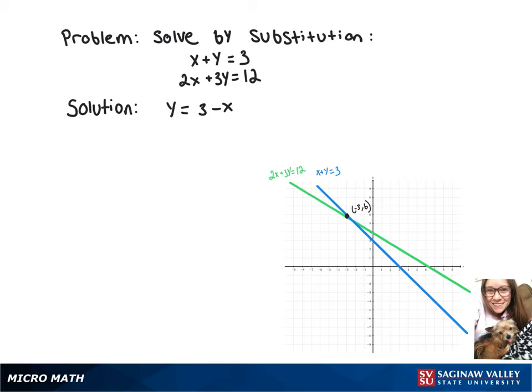And then we can take that y and sub it into our second equation. So we'll get 2x plus 3 times 3 minus x equals 12.